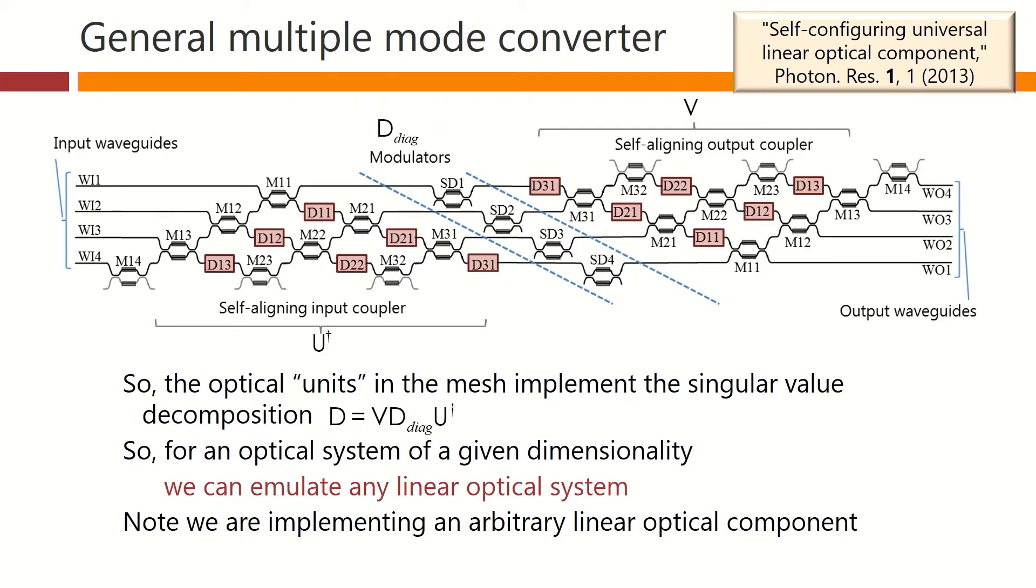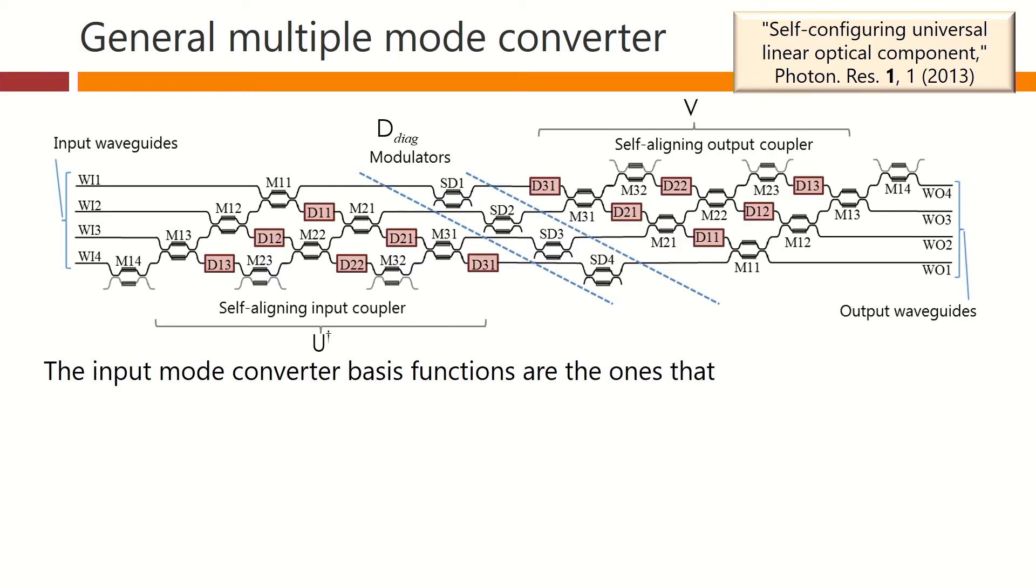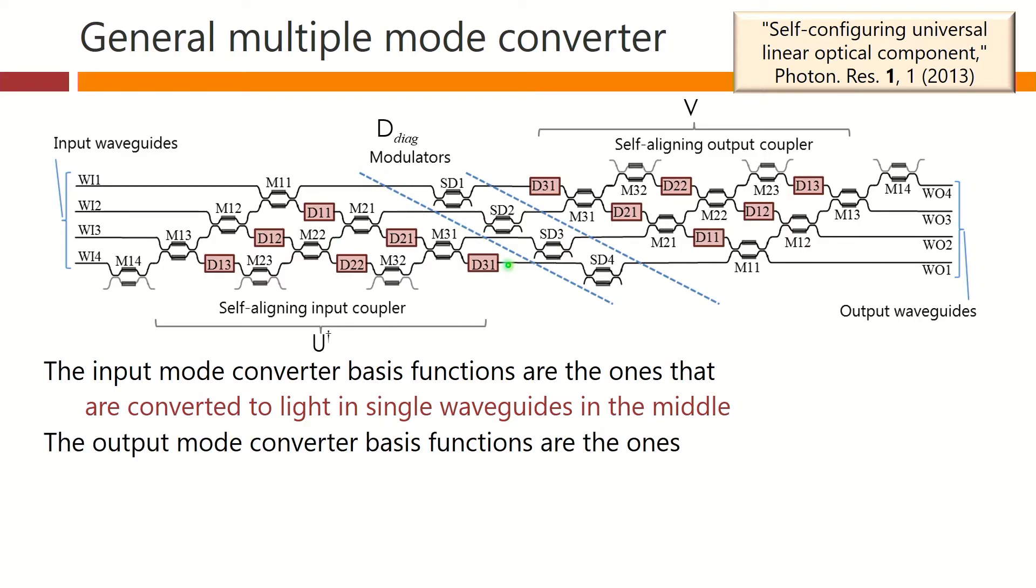Note, we are implementing an arbitrary linear optical component by constructing it using its mode converter basis sets. The input mode converter basis functions are the ones that are converted to light in single waveguides here in the middle. The output mode converter basis functions are the ones generated as a result of light in one of these waveguides giving us an output vector and so on for each of these different input waveguides to our output coupler system here.